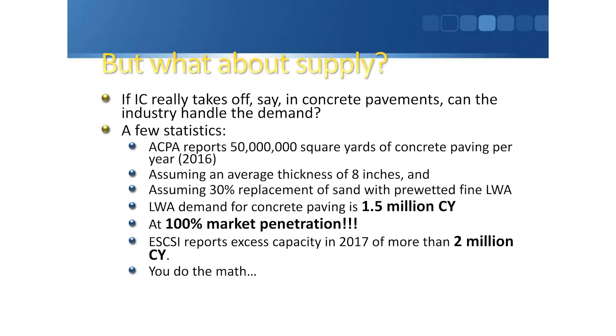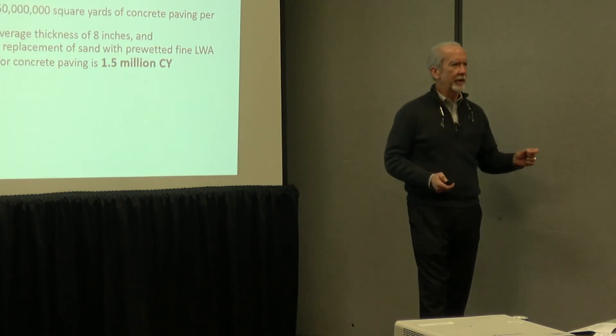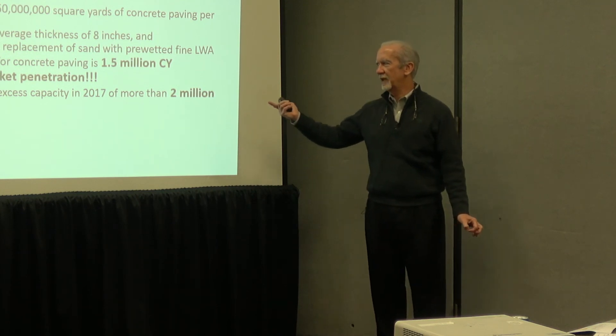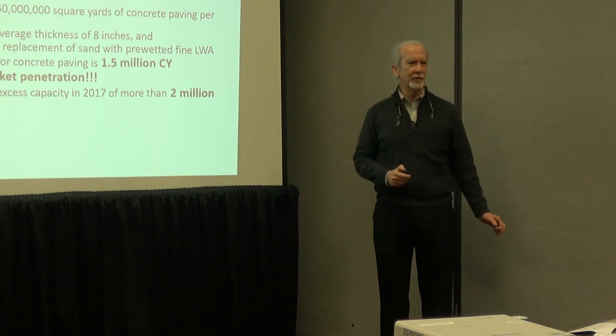Typically, in the concrete where you're specifying internal curing, that's really important concrete. Just using the example of concrete pavements, the American Concrete Pavement Association reports 50 million square yards of concrete placement per year in the United States. Using an average thickness of eight inches and an average replacement of 30% — probably on the high side — that's a lightweight aggregate demand of one and a half million cubic yards, if every square yard of concrete pavement was internally cured.